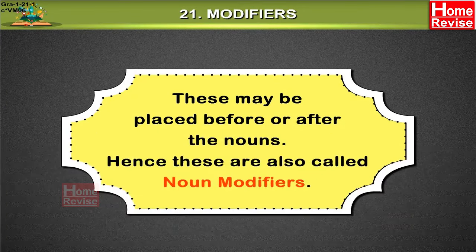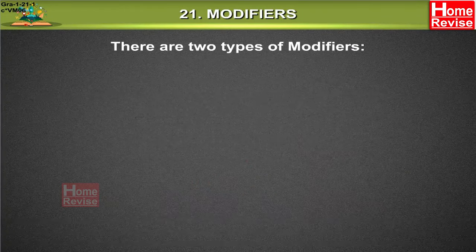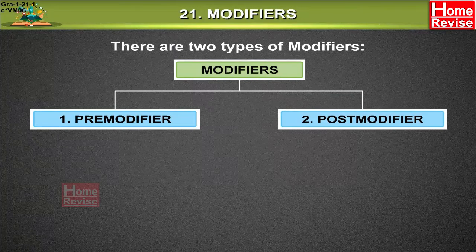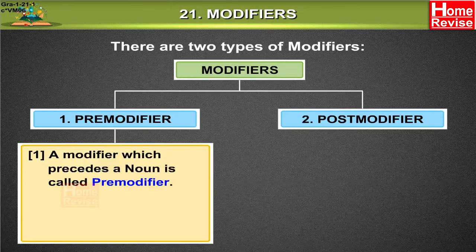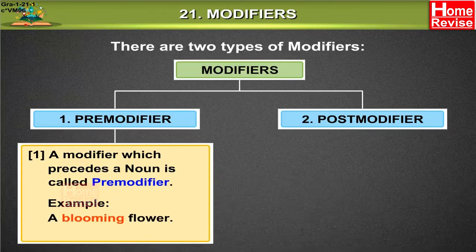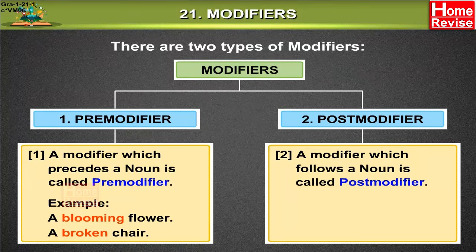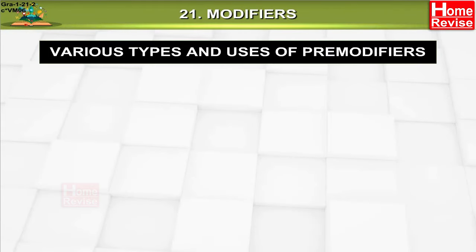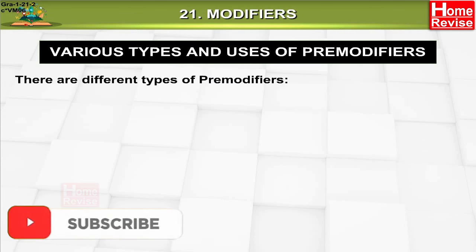These modifiers may be placed before or after the nouns; hence they are also called noun modifiers. There are two types of modifiers: one, pre-modifier; two, post-modifier. A modifier which precedes a noun is called a pre-modifier. A modifier which follows a noun is called a post-modifier. Example: 'a blooming flower', 'a broken chair' are pre-modifiers. 'We saw the men looking out hopelessly' illustrates a post-modifier. There are different types of pre-modifiers.